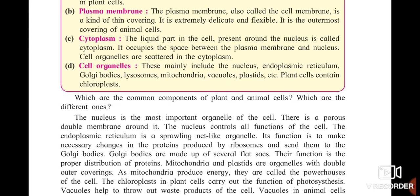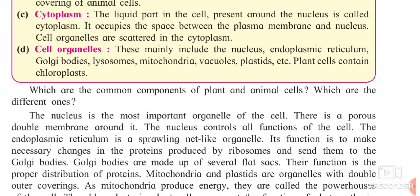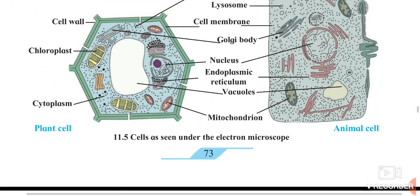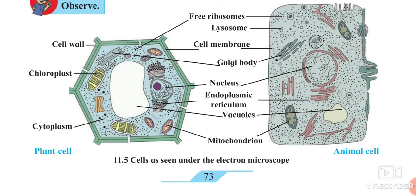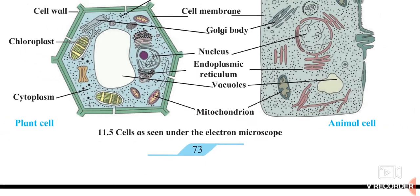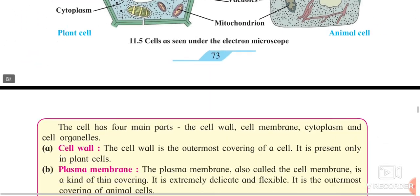The Golgi bodies: the endoplasmic reticulum sends the changed proteins into Golgi bodies. Golgi bodies are made up of flat bags. Their function is the proper distribution of proteins. Golgi bodies distribute proteins to all cell organelles. You can see Golgi bodies spread in both cells, distributing proteins throughout the complete cell.